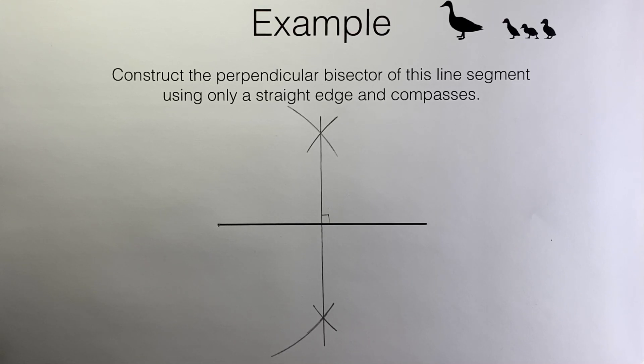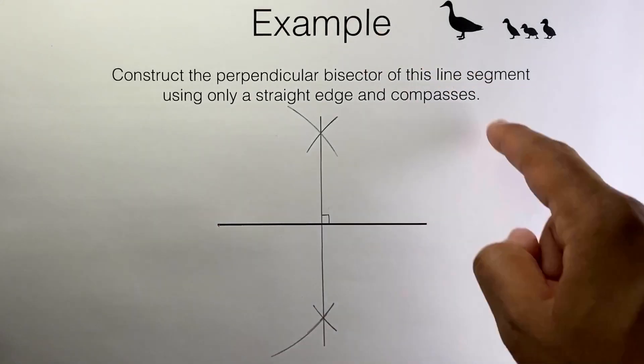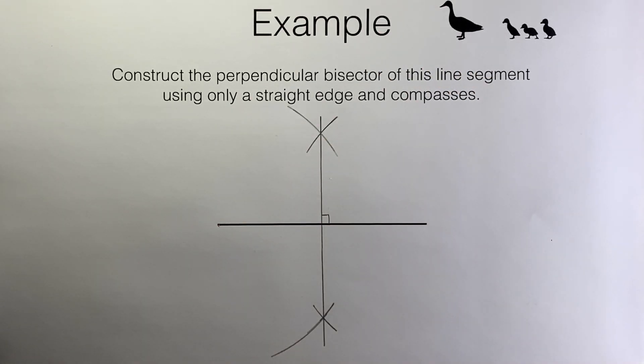A quick word on why this method works. The reason this works is that the diagonals of a rhombus are perpendicular bisectors of each other. And what we've actually done here is construct a rhombus.